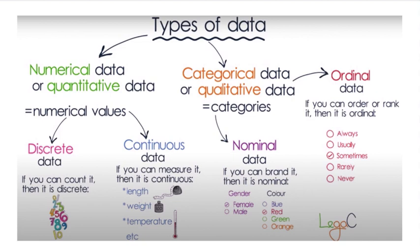Numerical data represents numbers and can be divided into two types: discrete and continuous data. Discrete data consists of whole numbers or countable values. Continuous data represents variables that can take any value within a range or interval — it can include decimal numbers and has infinite possible values. Examples include height, weight, temperature or time.